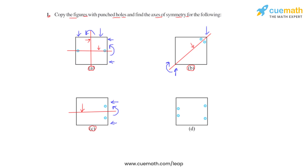Let us now see what happens in the case of figure D. Looking at the orientation of the punched holes and the symmetry of the figure, if we divide the figure using a horizontal line into two equal halves and fold the figure about this line, we will see that both equal halves coincide, making this line the axis of symmetry for figure D.